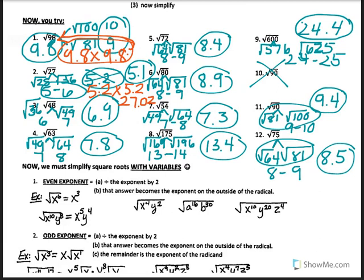Check 7.8 times 7.8 — that gives 60.84. Let's check in the calculator using second, square root, then type 63. Push the arrow keys. Could I have done 7.9? Let's check — 7.9 times 7.9 — is that going to be under 63? Yes. So 7.9 would have been a better estimate.